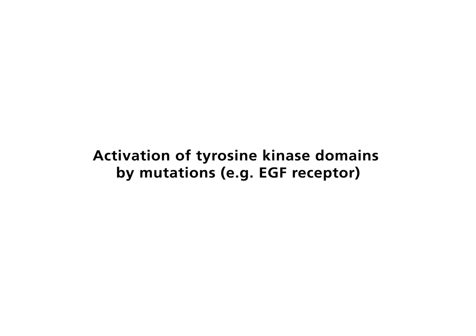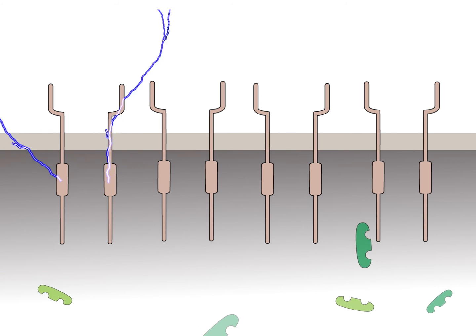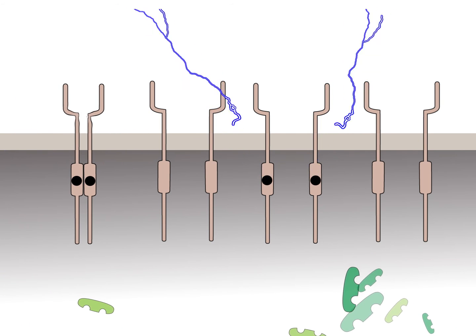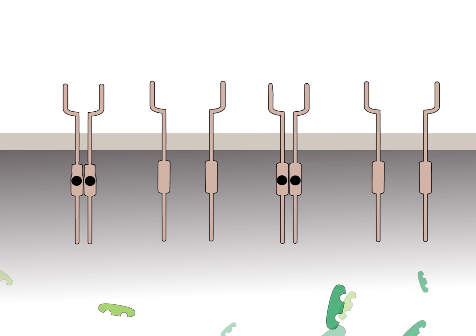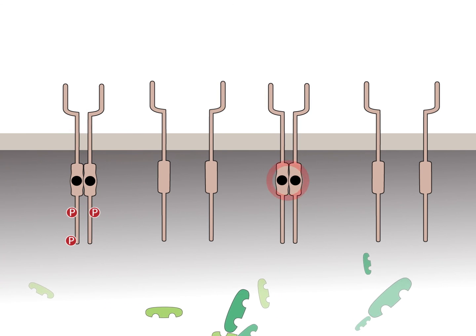Activation of tyrosine kinase domains by mutations — for example, the EGF receptor. Due to mutations in the cytoplasmic kinase domain of the receptor, the kinase is constitutively active. Signaling is inappropriate.